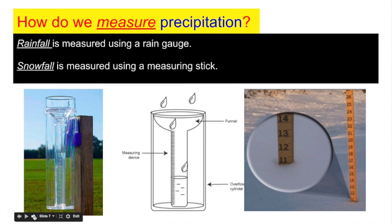How do we measure precipitation? Rainfall is measured using a rain gauge — just like a glass that has graduated markings where you can measure in milliliters or other measurement units. Here you have an actual rain gauge stuck to a fence post out in the field that collects rainwater, and you can use these graduations to measure. Snowfall is measured using a measuring stick.